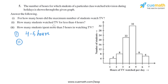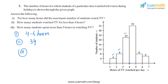The second part asks: how many students watched TV for less than 4 hours? For less than 4 hours we have 22, 8, and 4 students. Adding them together: 22 plus 8 is 30, plus 4 gives us 34. So there are 34 students who watch TV for less than 4 hours.